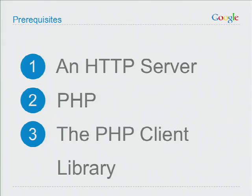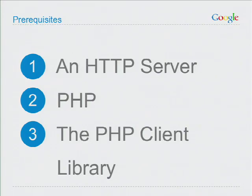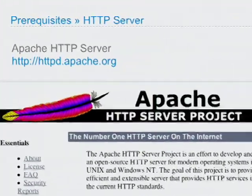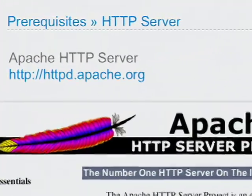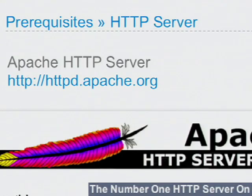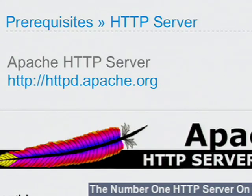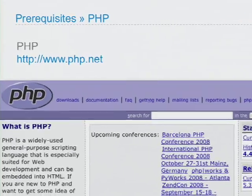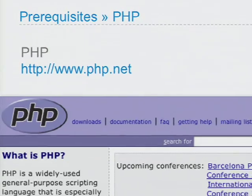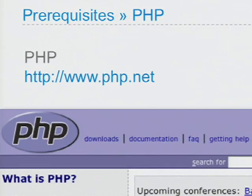Most hosting providers already provide an HTTP server and PHP, but if you haven't already done so, I highly recommend installing a copy locally for development purposes. Any HTTP server will do, provided that it supports executing PHP scripts. I recommend using the Apache HTTP server, which can be downloaded from httpd.apache.org. Once your HTTP server is installed, you can download PHP from php.net. OS-specific installation instructions are posted on each of these sites.